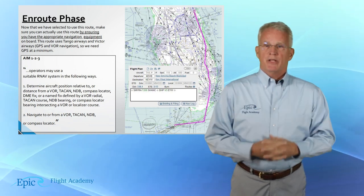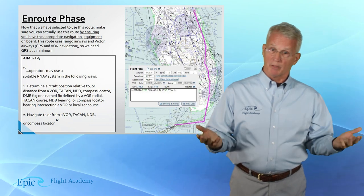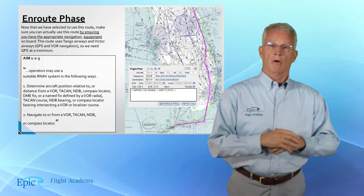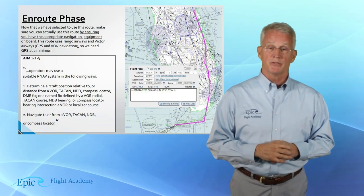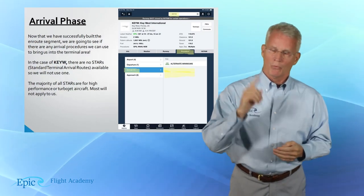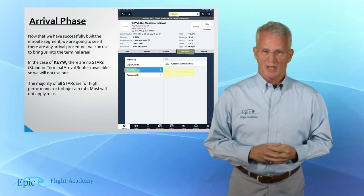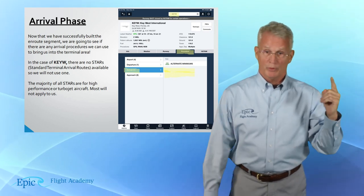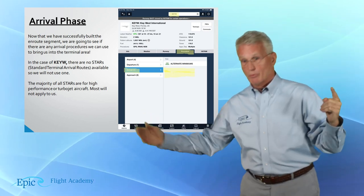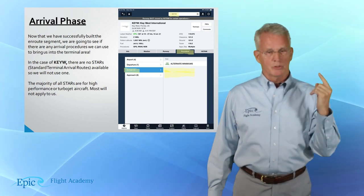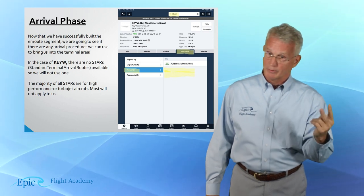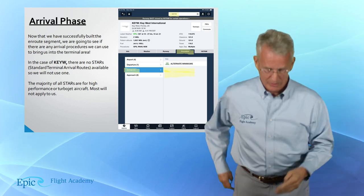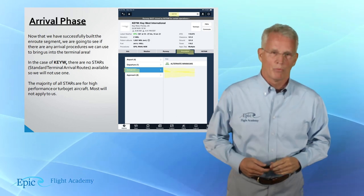Now that you have successfully built the en route segment, we move into Phase 4 of our planning, and that is Arrival. Remember, in AIM Chapter 5: Section 1 is Pre-Flight and Planning — that was the previous video — Section 2 is Departure, Section 3 is En Route, and Section 4 is Arrival.